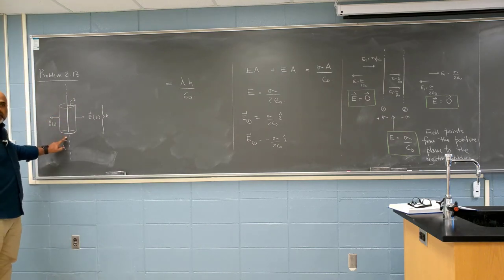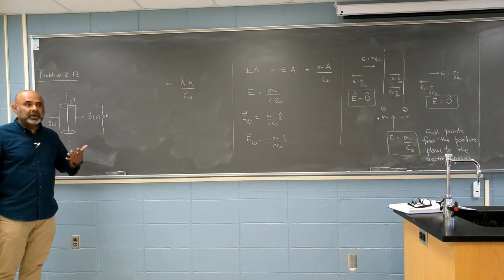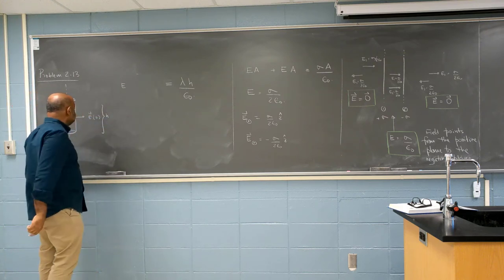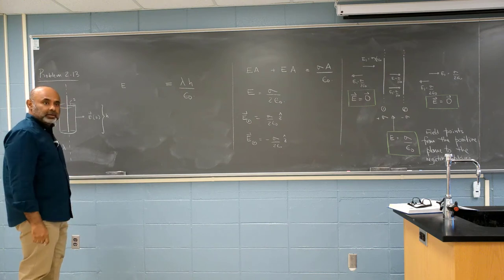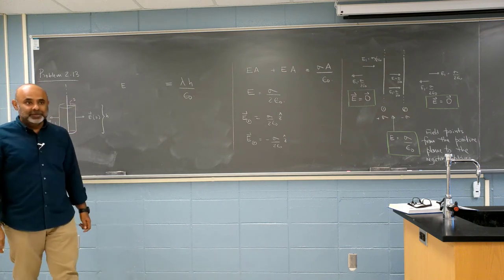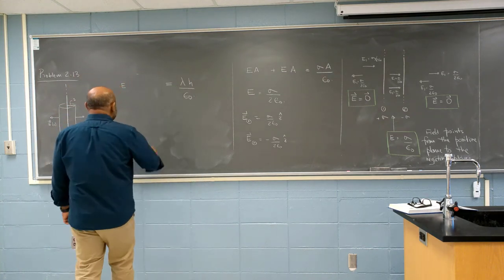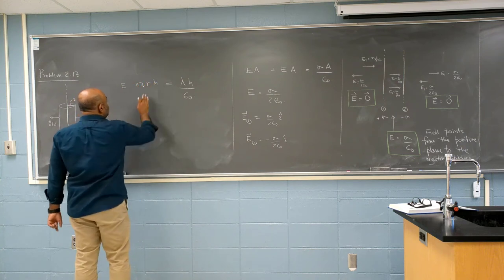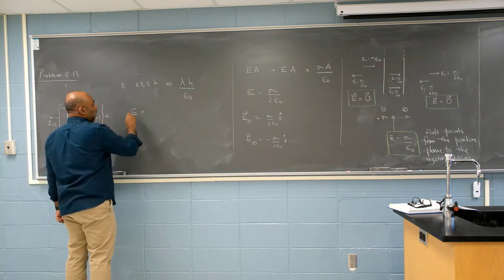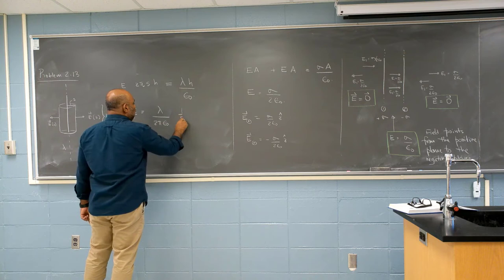Do we have to worry about the top and bottom? No. So E dot dA is simply when integrated becomes E times A. So E is just E. It's a function of S, possibly. And area is what? Area, the spherical area of a cylinder. 2 pi R H. Oh, not R, but S. H. So then the magnitude is going to be lambda over 2 pi epsilon naught, 1 over S.